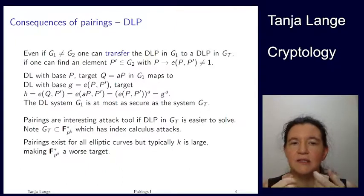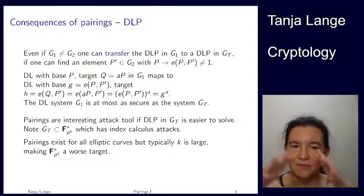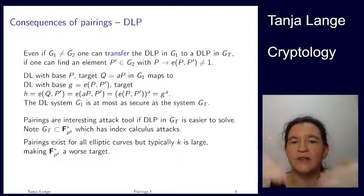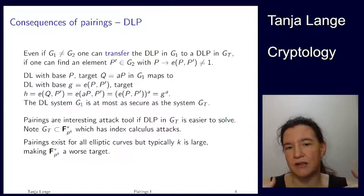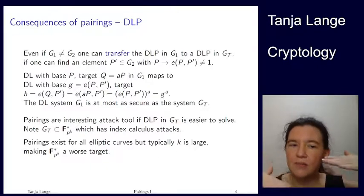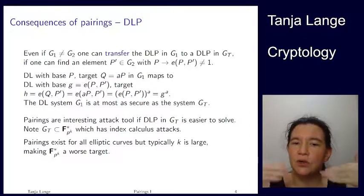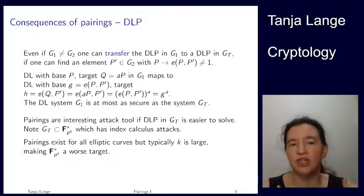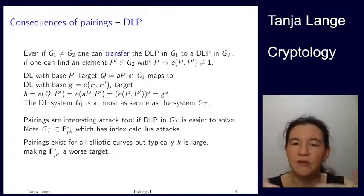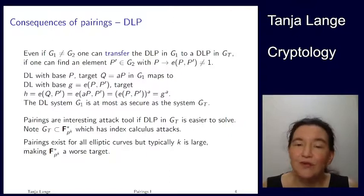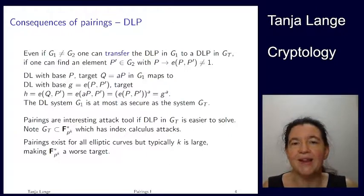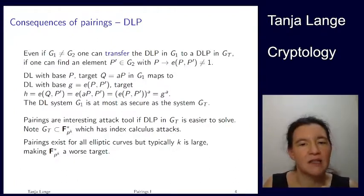Now I said before that GT is a subset of this bigger finite field, but in this bigger finite field, we have index calculus attacks. So there's some range of k where we can actually solve much easier in GT than we can solve in G1. G1, we only have the generic attacks because it's an elliptic curve, and in GT, we also have these index calculus attacks. Of course, if we have such a pairing, we do have an extra attack in G1, namely this transfer, but we don't have anything else directly staying in G1.